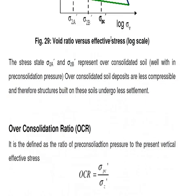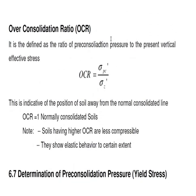The Overconsolidation Ratio (OCR) is defined as the ratio of pre-consolidation pressure to the present vertical effective stress. OCR equals 1 for normally consolidated soil. A greater OCR is always better because the soil will be less compressible — it means the pressure being applied now is less than the pre-consolidation pressure. OCR greater than 1 is always a favorable condition for construction.